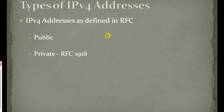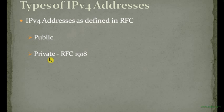IPv4 addresses are defined in two types: public IP addresses and private IP addresses. Public IPv4 addresses are used to communicate through the internet, whereas private IP addresses are used in private networks or intranets. The private range of IPv4 addresses is reusable in different locations — each company can have its own private range, and the same range can be reused in different locations as defined in RFC 1918. Private IP addresses are not allowed on the internet because of their reusability; any leak of private IPv4 addresses to the internet would create a huge duplicate problem and a big mess.